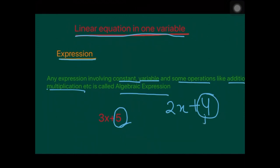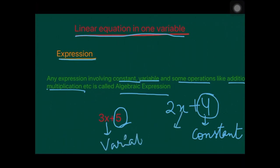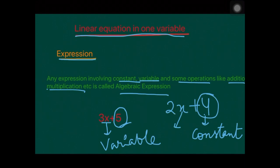In these expressions, the numbers like 5 and 4 are simple numbers, so these are known as constant terms. Their value will never change. The X in these expressions is known as a variable because the value of X can be anything — you can put any number in its place. The multiple of X, or the multiple of the variable, is something we will now define.